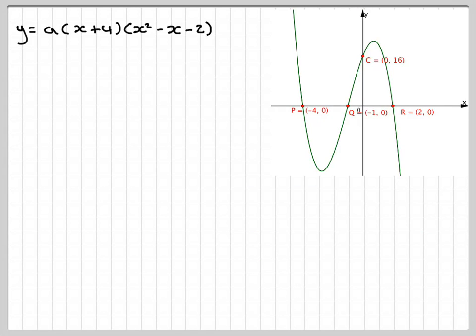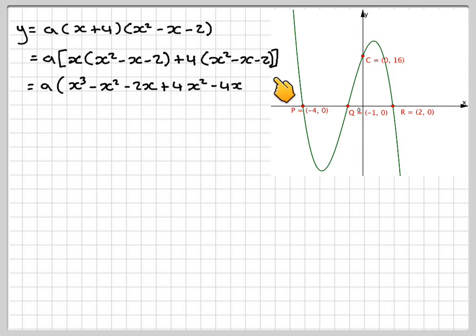And now what we need to do is we need to expand these two brackets. So we're going to have a times x times x squared minus x minus 2, and then plus 4 times x squared minus x minus 2. So expanding very carefully, we get a times x cubed, x times minus x gives me minus x squared, x times minus 2 gives me minus 2x, plus 4x squared, minus 4x, minus 8.